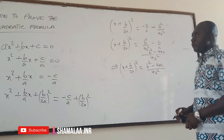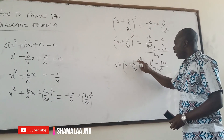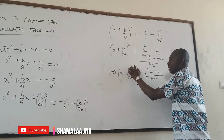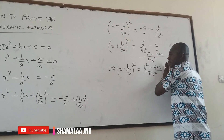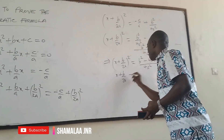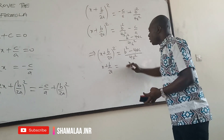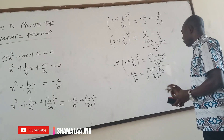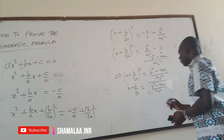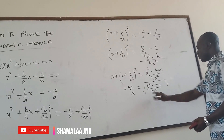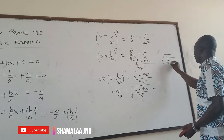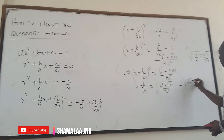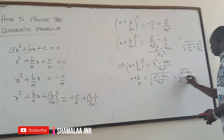We are solving for x, so we need to make x the subject. There is a square on the left side, so we take the square root of both sides. We get x + b/2a equals the square root of (b² − 4ac) over 4a². The square root of 4a² is 2a, so the right side becomes √(b² − 4ac) / 2a.